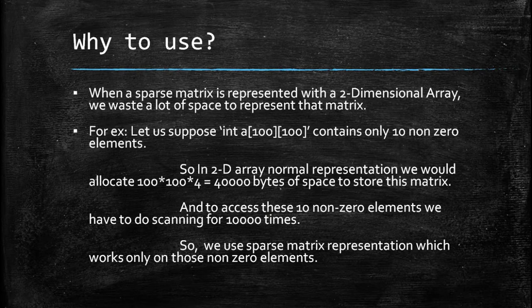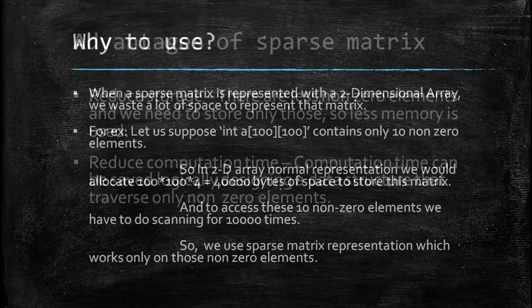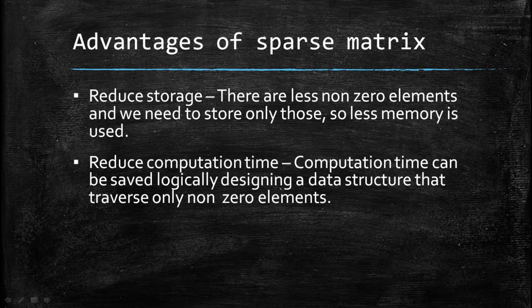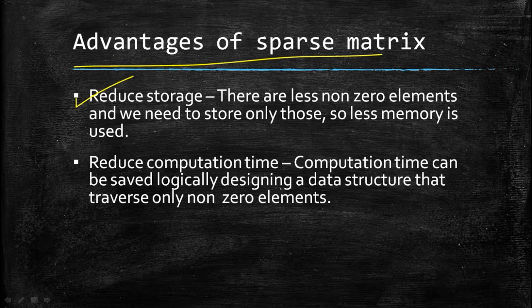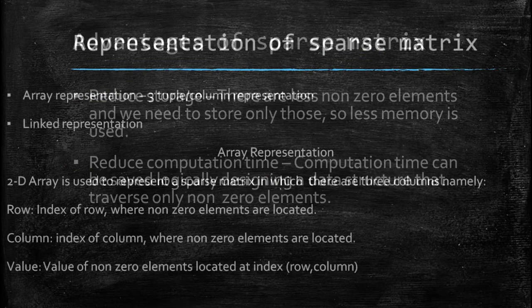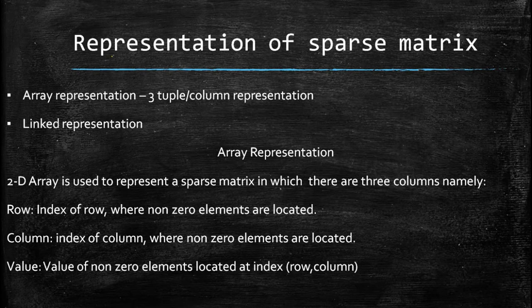The advantages of a sparse matrix are: first, it reduces storage and occupies less memory. Second, it scans values far fewer times, which significantly reduces computation time. These are the two main advantages of a sparse matrix.